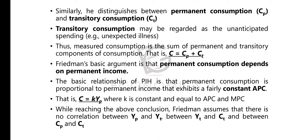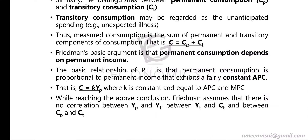In reaching this conclusion, Friedman assumes there is no correlation between Yp (permanent income) and Yt (transitory income). Also, there is no relationship between Yt (transitory income) and Ct (transitory consumption). Additionally, there is no relation between Cp (permanent consumption) and Ct (transitory consumption).